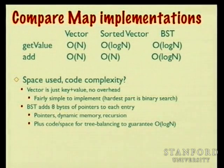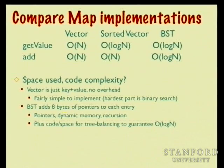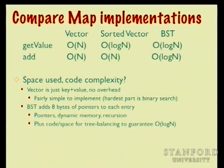Let me put us back to where we were a couple of lectures ago, where we talked about ways to implement the map abstraction — key-value pairing for quick search and retrieval. We looked at a vector and how sorting it would let us use binary search. But adding was still slow due to the need to shuffle contiguous memory, which motivated the binary search tree — designed for logarithmic divide-and-conquer, both for search and insert.